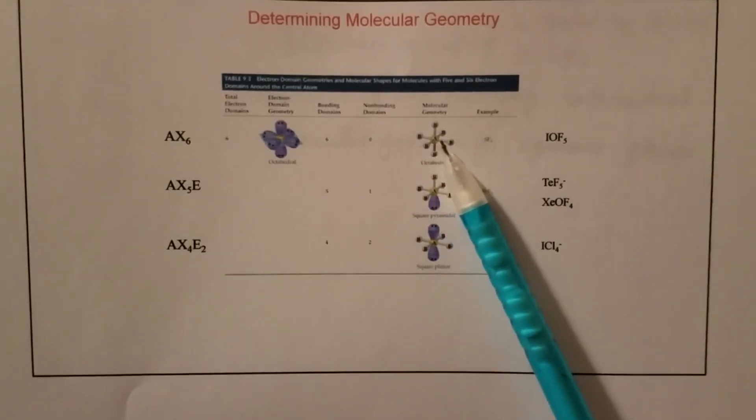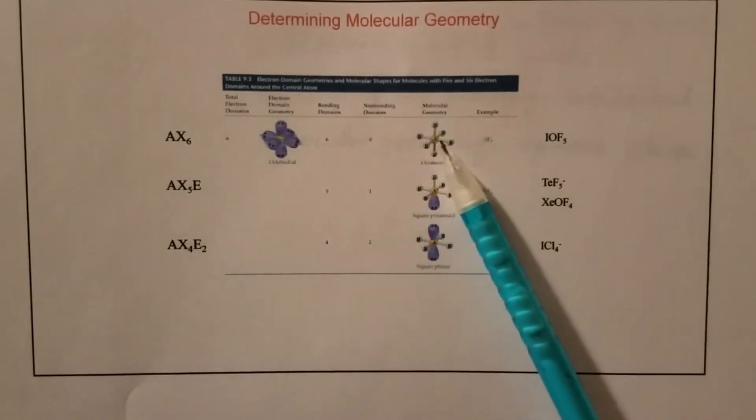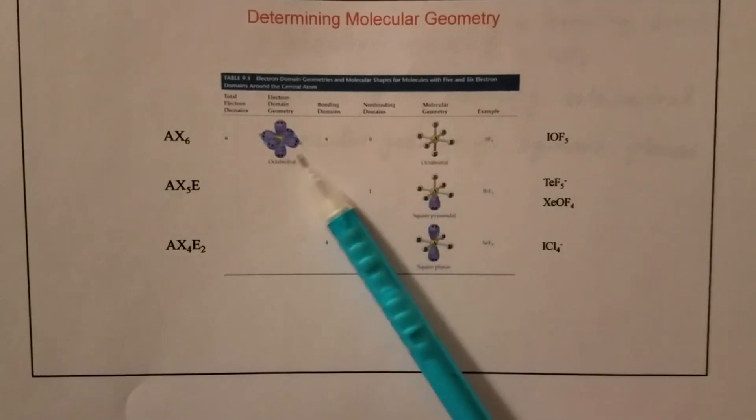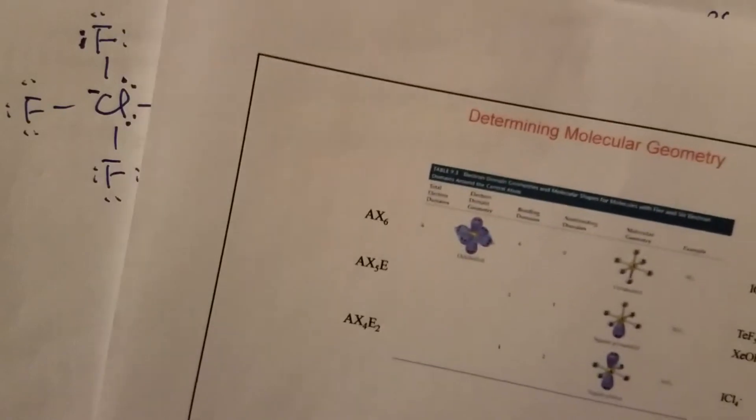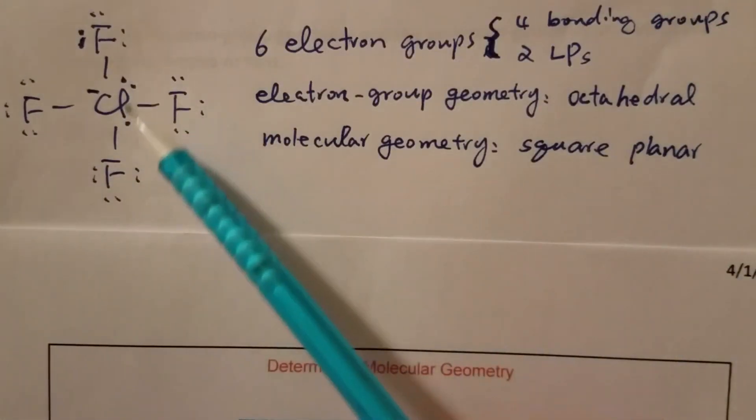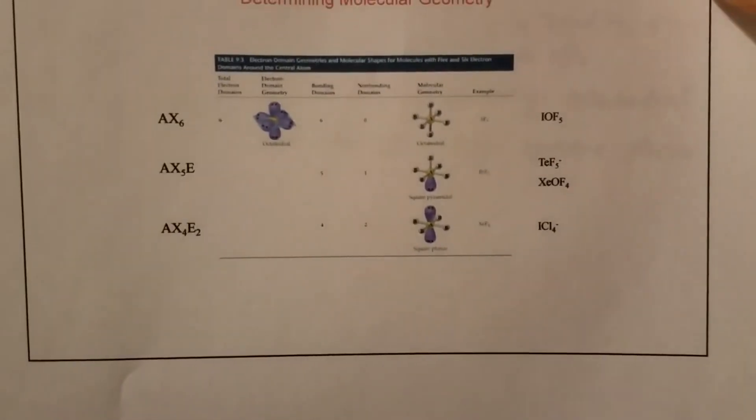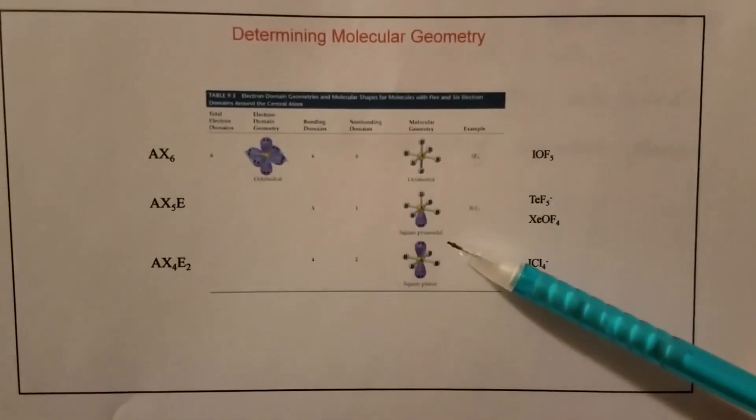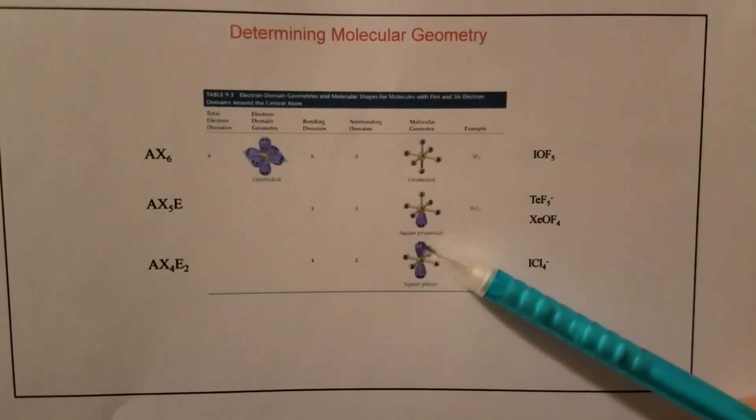If there's no lone pair, electron geometry is the same as molecular geometry, so both are octahedral. But in our example right here, we have actually two lone pairs, so two lone pairs and four bonding groups. Then the lone pairs will prefer to occupy the axial positions.